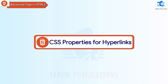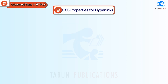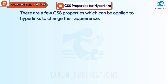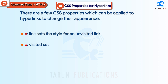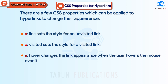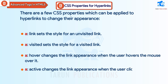CSS properties for hyperlinks: There are a few CSS properties which can be applied to hyperlinks to change their appearance. A:link sets the style for an unvisited link. A:visited sets the style for a visited link. A:hover changes the link appearance when the user hovers the mouse over it. A:active changes the link appearance when the user clicks on it.